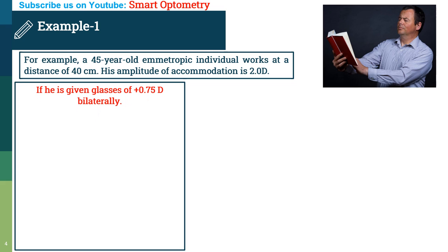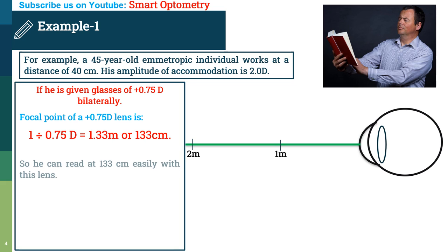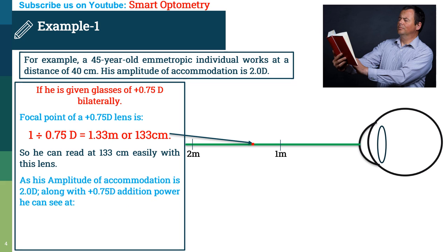Now, if he is given reading glasses of plus 0.75 diopter bilaterally, then focal point of a plus 0.75 diopter lens is 1 divided by 0.75 or 1.33 meter or 133 cm. So, he can read at 133 cm easily with this lens.